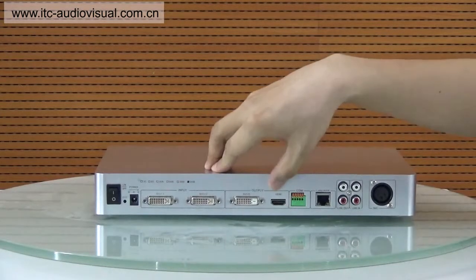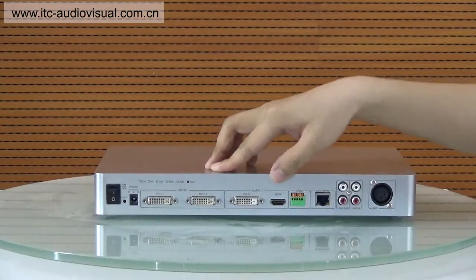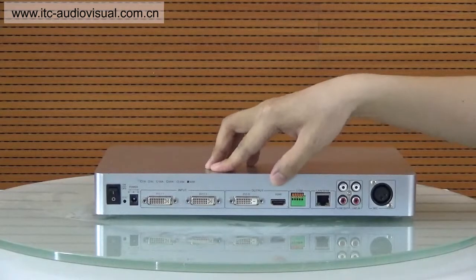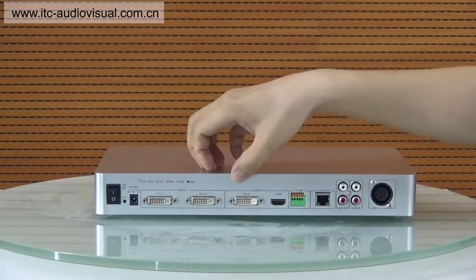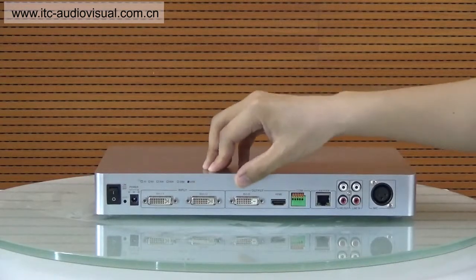And this HDMI output is for the audiovisual signal and it's for the main stream. And this DVI-I output is for the auxiliary stream.